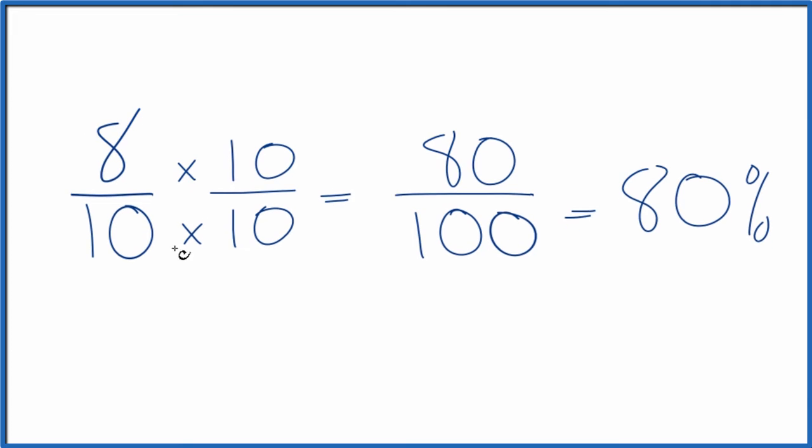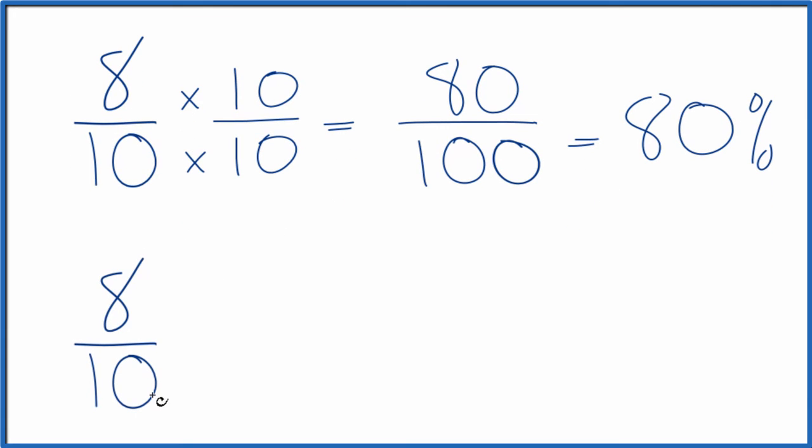The next way, you could take 8 tenths and divide 8 by 10 on your calculator. You'll get 0.8. Then you just multiply that by 100. Multiply your decimal by 100. That'll give you a percent, which again is 80 percent.